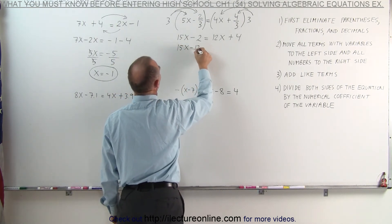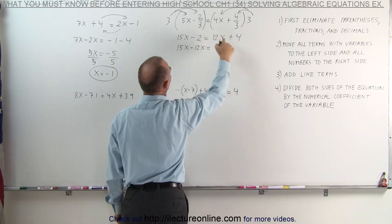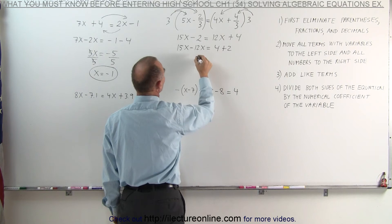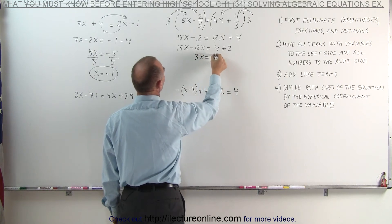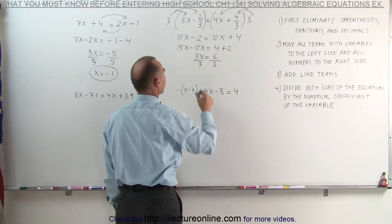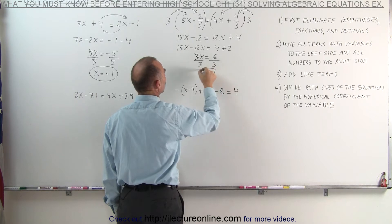15x minus 12x is equal to 4 plus 2. Notice the minus 2 becomes a plus 2, the 12x becomes a minus 12x. Combining like terms, 3x is equal to 6, and dividing both sides of the equation by the numerical coefficient, the number in front of x, we get x equals 2.